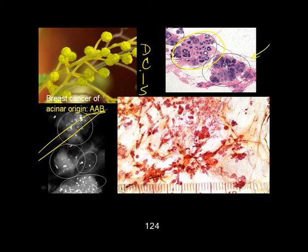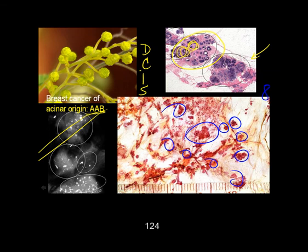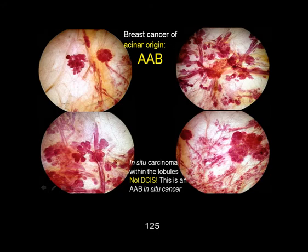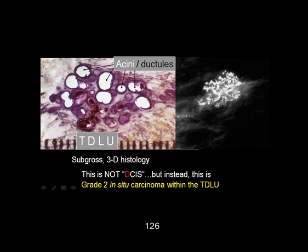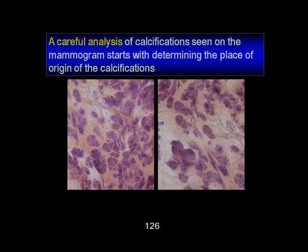This is a lobule. These are extremely distended acini. This one is a three-dimensional 8 by 10 centimeter section. This is a TDLU, this one is a TDLU — 50 of them. No, sir — this is not DCIS. It's cancer inside, within the TDLU unit. Read my lips: that's a good cancer, we can control it. This is an AAP — acinar carcinoma of the breast. It can be 22 millimeters. It's cancer inside, within the TDLU.